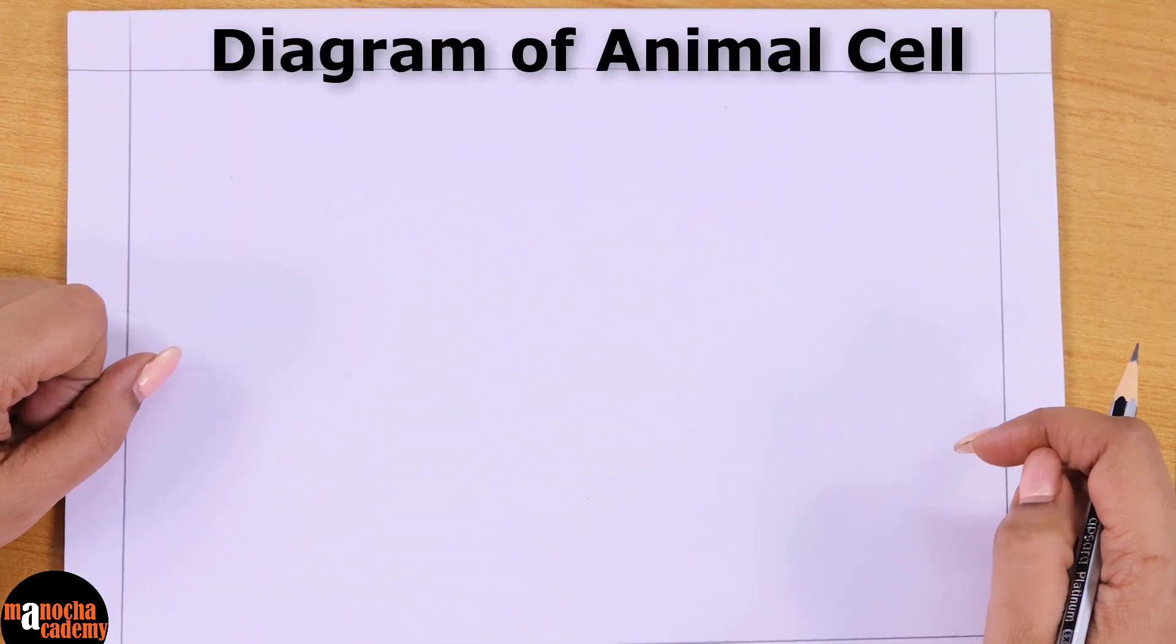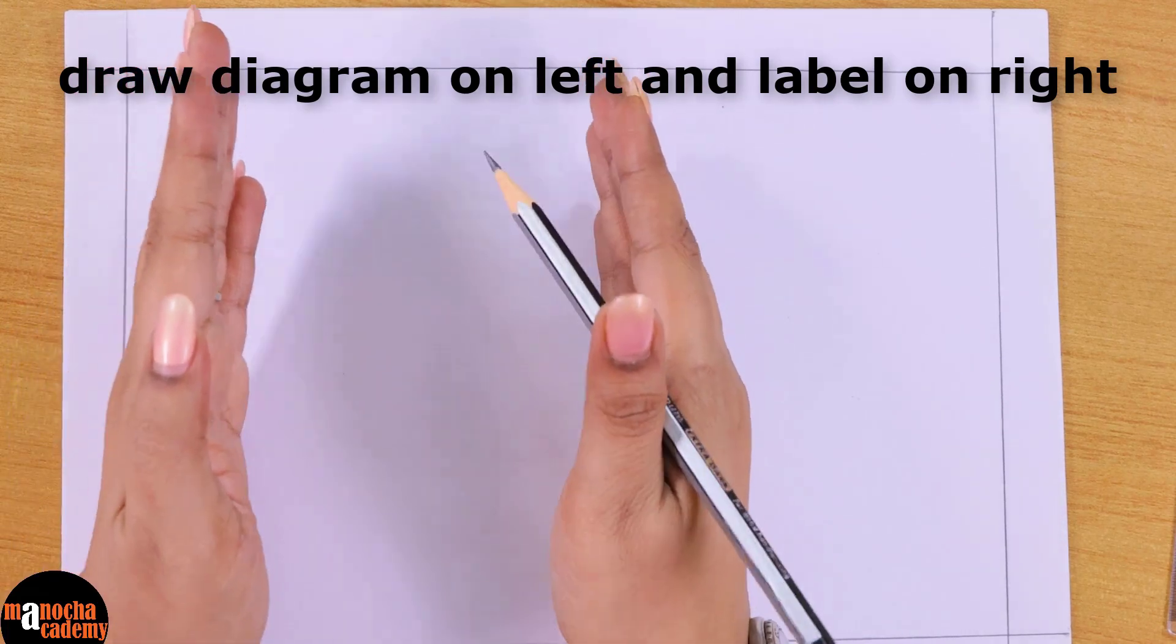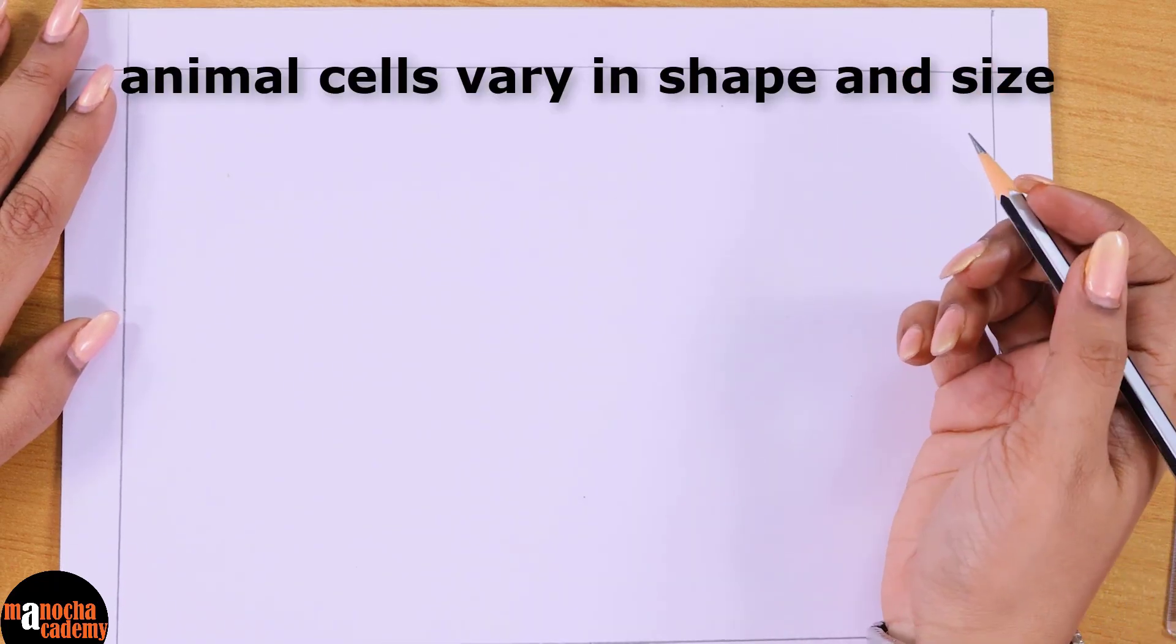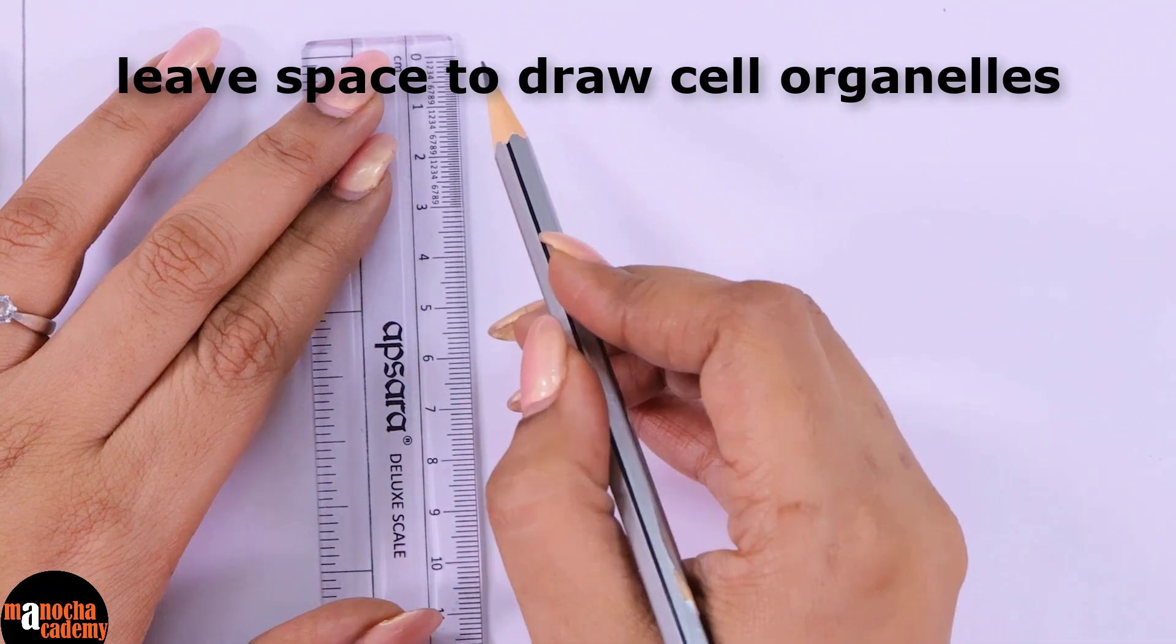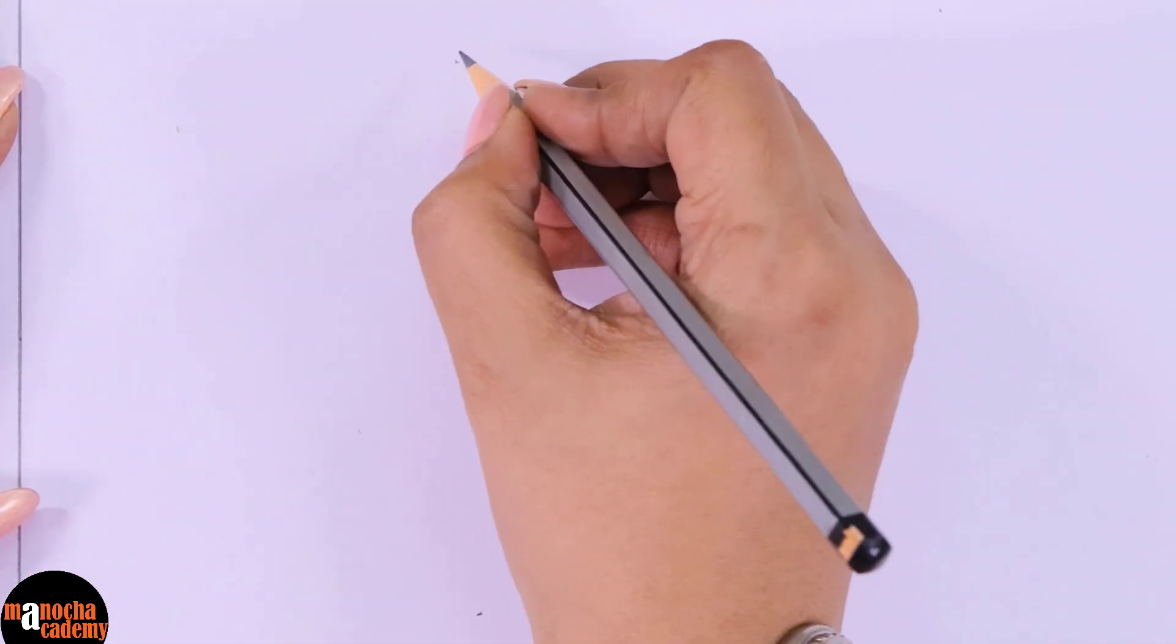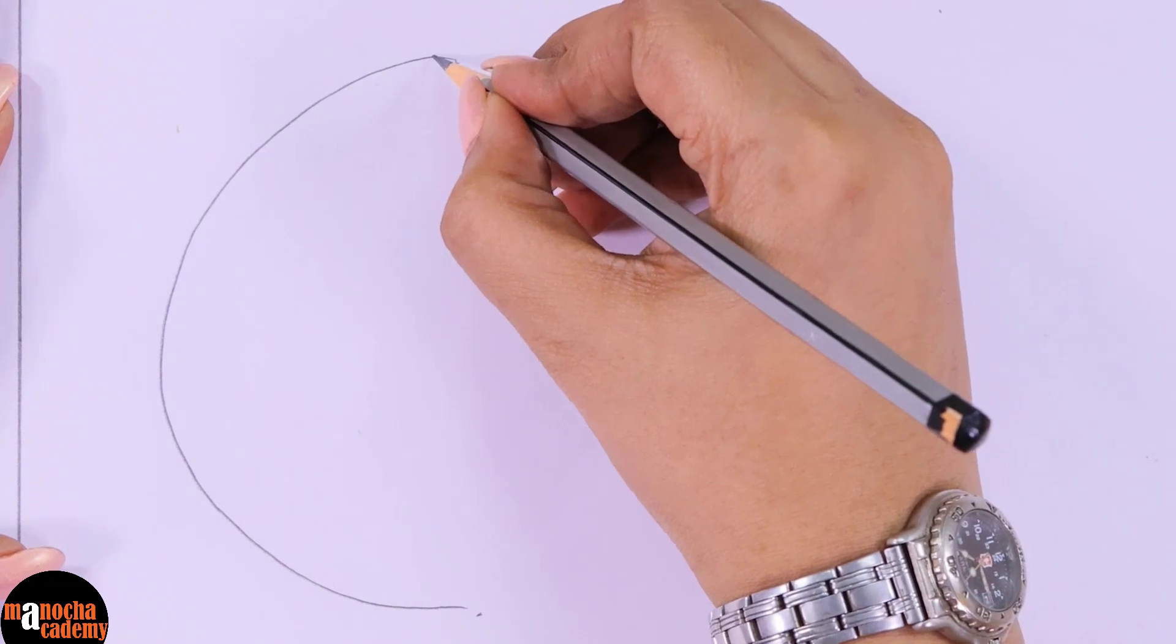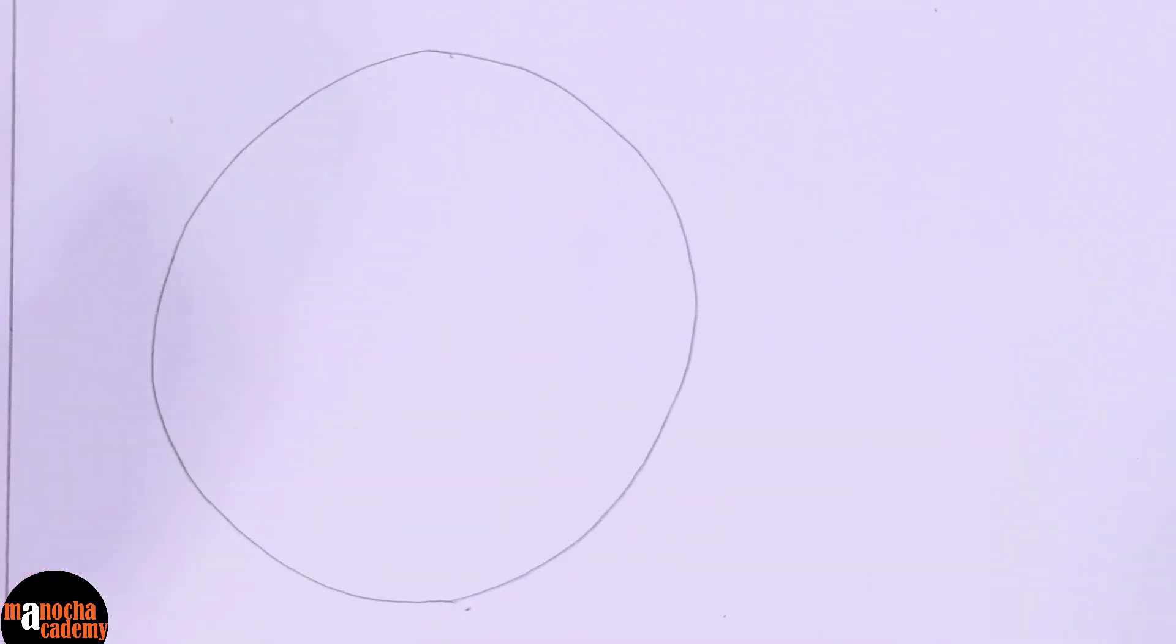Today we are going to see how we can draw the diagram of an animal cell. So for that I have taken this page where I will be drawing the diagram mostly shifted towards the left hand side so that I have space on the right hand side for labeling. Now an animal cell can have any shape or size. So I'll have to keep some space inside the cell so that I can draw all the cell organelles. The length of the cell I will keep at 11. You can make it a circle or an elongated structure. I will make it an ovoid shape. Now that is your cell membrane. As you know an animal cell has a cell membrane as the covering.